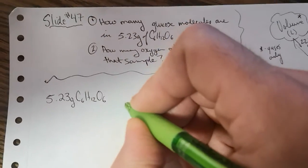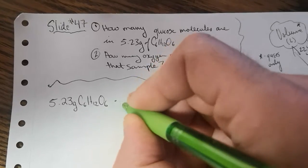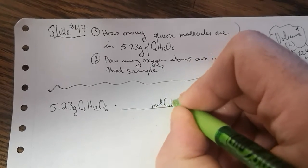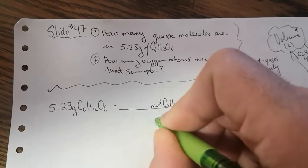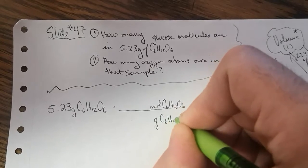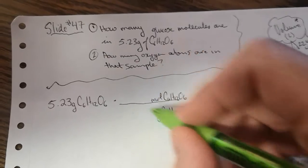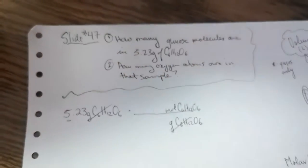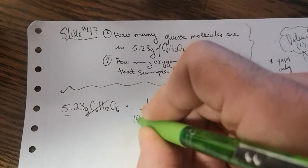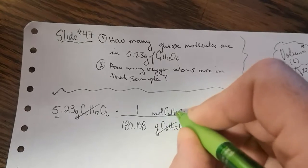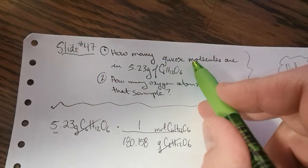So for 5.23 grams of C6H12O6, if we're looking to first convert that into moles of C6H12O6, we do our quick check to make sure that the units on opposite sides of our fraction cancel. They do. One mole was equal to 180.158 grams. So we've got moles of glucose, but we're actually solving for molecules.